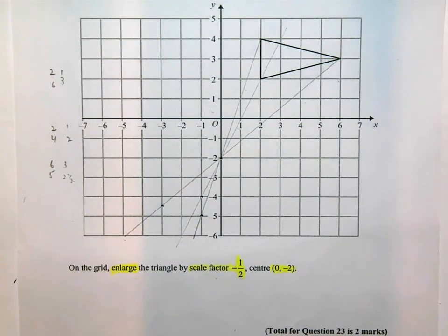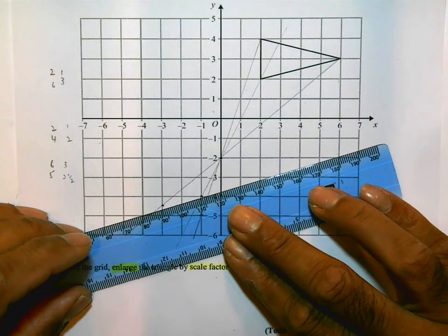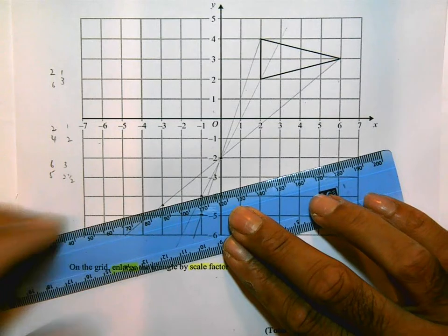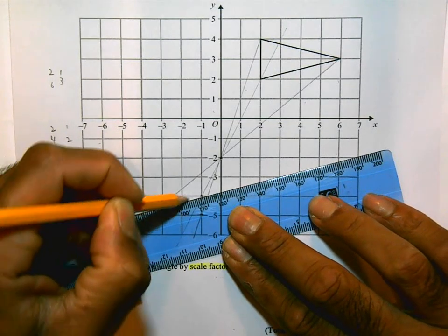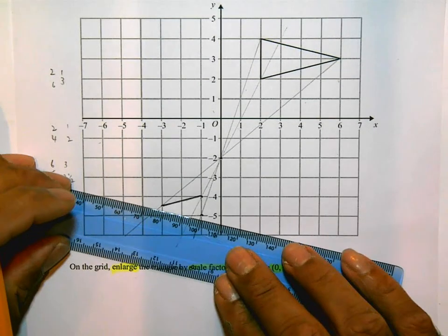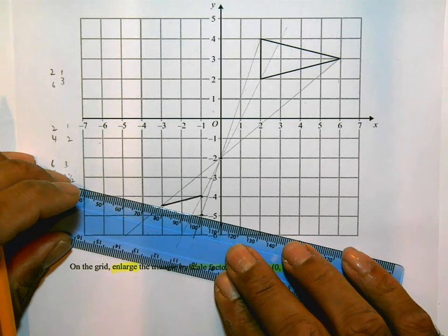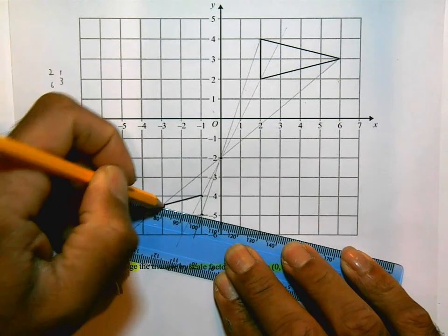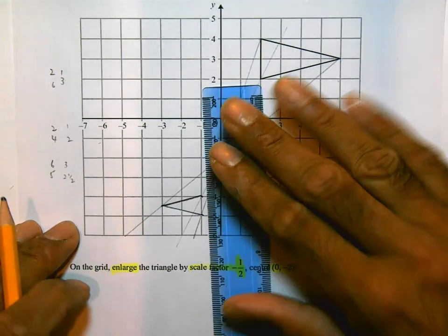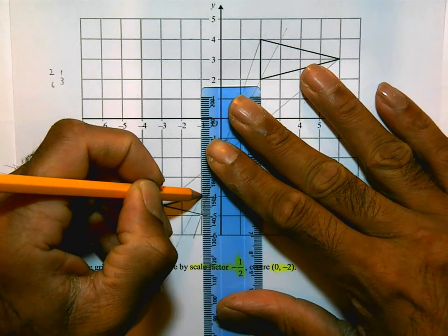Now I need to just join those three points. And do this as accurately as you possibly can. You don't want to lose marks because of a careless drawing or something slightly inaccurate.